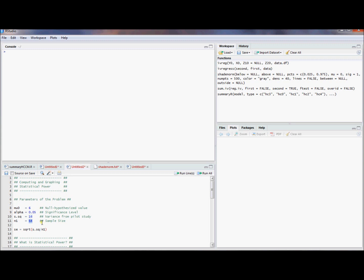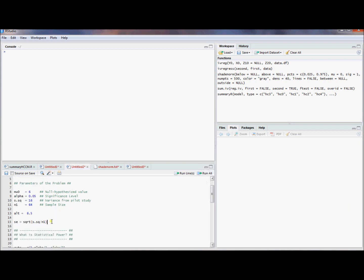And we want to know what is the power for a sample size of 64. We're going to think of the alternative hypothesis of what if the mean is 6.5. We'll need an intermediate calculation. And that intermediate calculation is we need the standard error of the mean. And that's just the square root of the sample variance divided by the sample size. So there are the parameters of the problem.